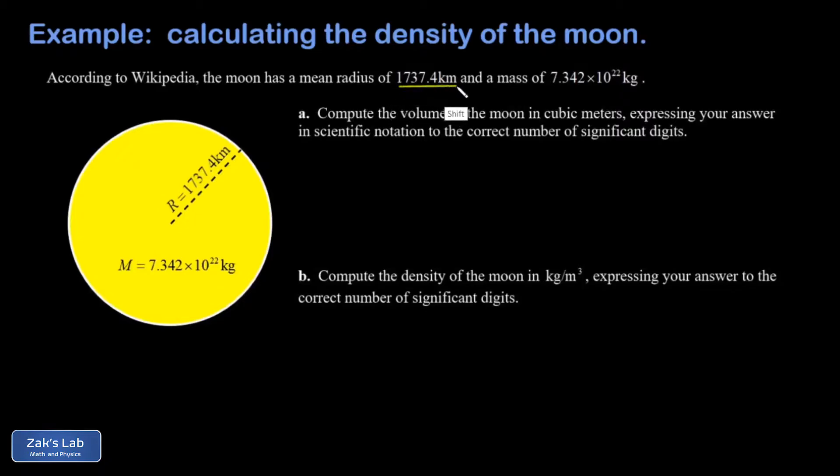We're given the radius of the moon as 1737.4 kilometers and the mass of the moon as 7.342 × 10²² kilograms. In part A, we're computing the volume of the moon in cubic meters, which means we immediately need to get that radius number into meters instead of kilometers.